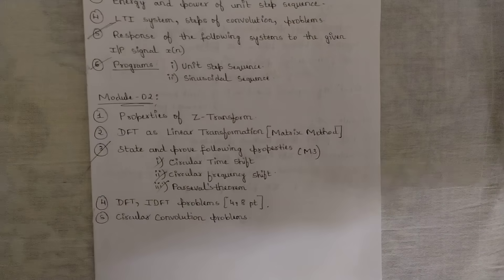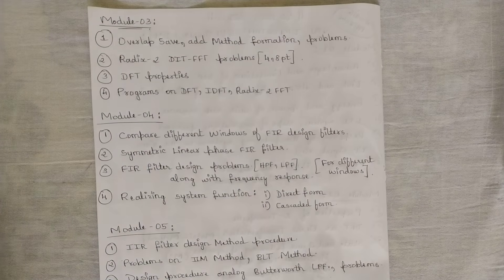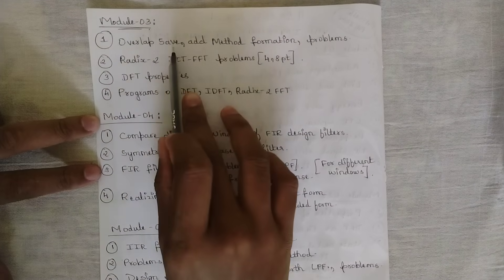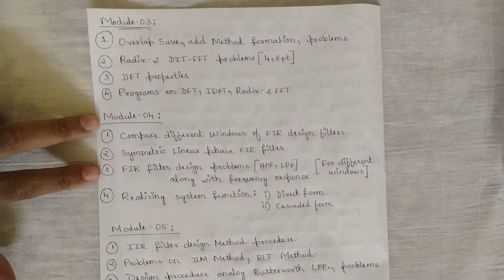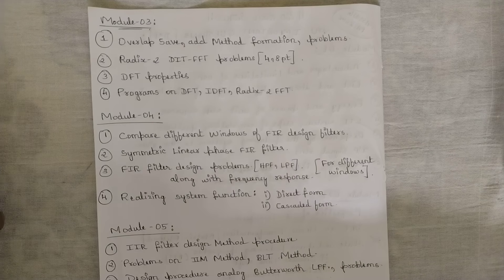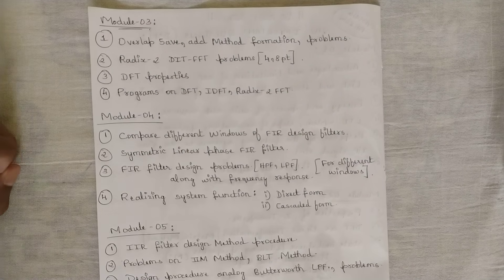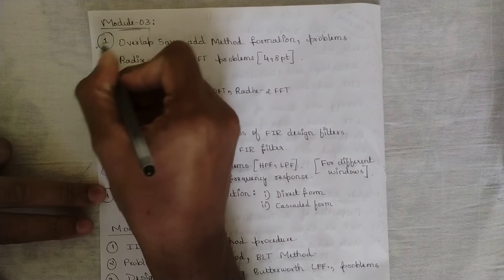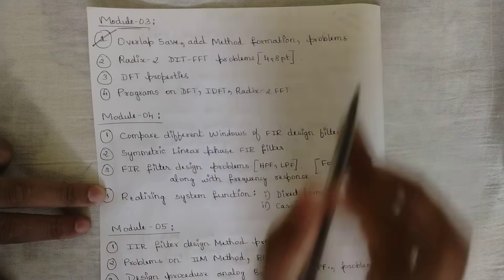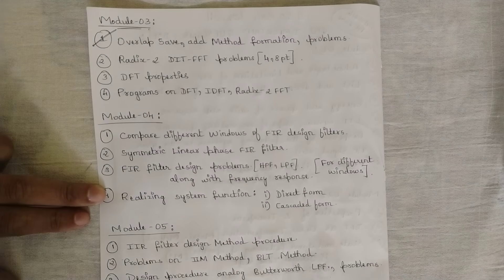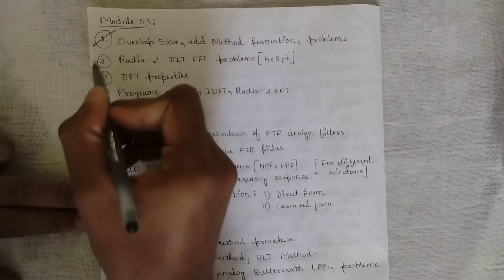Now let's get to module three. The first question is related to the overlap save and overlap add method — their formation, algorithm, and block diagram. I have covered this in my recent members videos. This is a repeated question in the previous two to three years' papers, so you should focus on it very well. There are high chances this question will be asked, along with problems related to overlap save and add method for around eight marks.